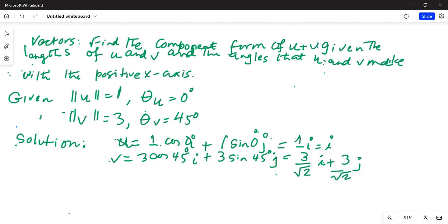So if we now add u plus v we get i plus 3 over square root of 2. I rationalize the coefficient of i by multiplying by square root of 2 in the numerator and denominator. In the denominator, square root of 2 times square root of 2 becomes 2, and in the numerator it's 3 square root of 2. This is i plus the same thing, rationalizing the denominator for the j component.